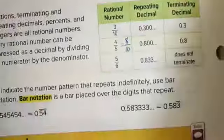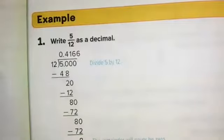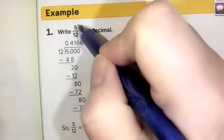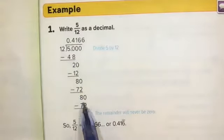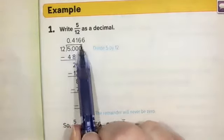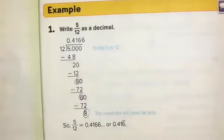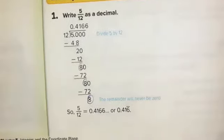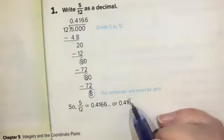Example one: we are asked to write five-twelfths as a decimal. Five-twelfths means five divided by 12. Working through that long division, we get 0.416 and the six repeats because we keep seeing that eight being left over each time. As a repeating decimal, we write this as 0.416 with the bar notation over the six.